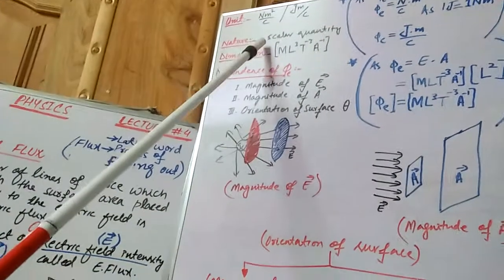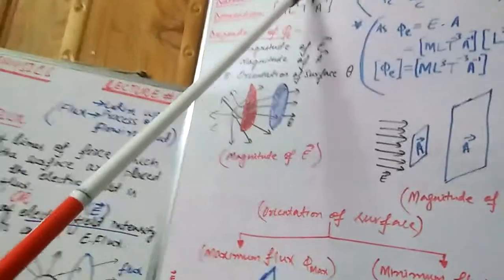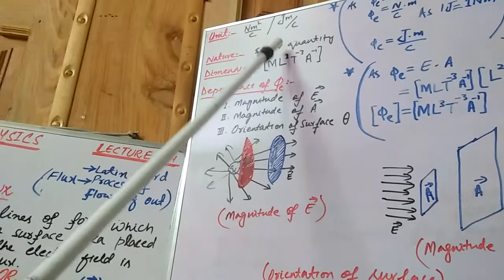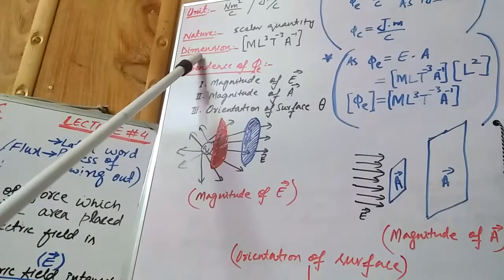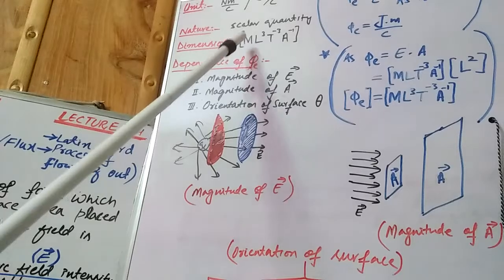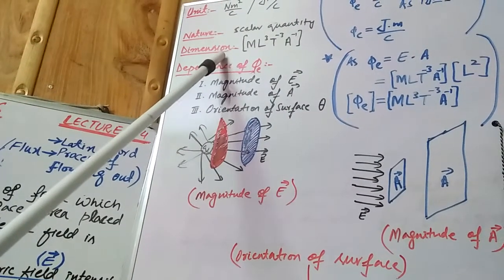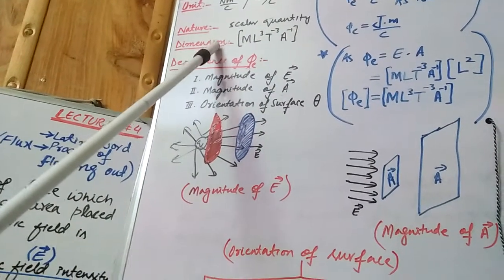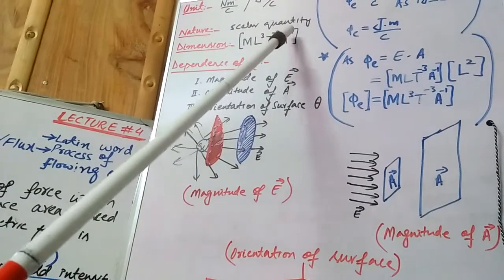The next point is nature: being a scalar product, electric flux is a scalar quantity, meaning electric flux does not require any direction for its description. The next point is dimension. Dimensions of all physical quantities are very important for your exam. The dimension of electric flux is M L³ T⁻³ A⁻¹.